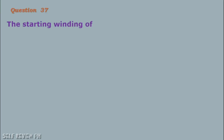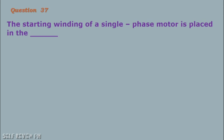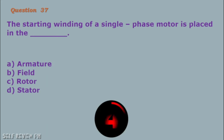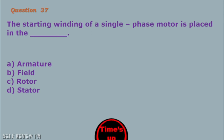Question number 37: The starting winding of a single-phase motor is placed in the blank. A. Armature B. Field C. Rotor D. Stator. The correct answer is letter D, stator.